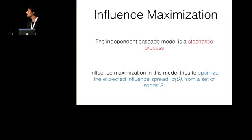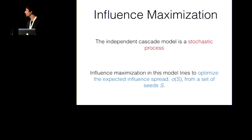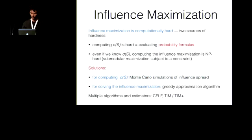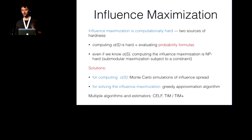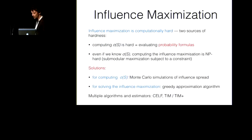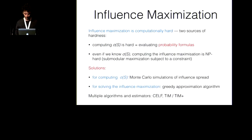Since we are dealing with probabilities, the independent cascade model is a stochastic process. The problem tries to optimize the expected influence spread, denoted sigma(S), from a set of k seeds. This is computationally hard with two sources of hardness: computing expected influence spread is hard because it reduces to evaluating probabilistic formulas over almost all paths in the graph, and selecting the k seeds is NP-hard because it reduces to maximizing a submodular function subject to a cardinality constraint.